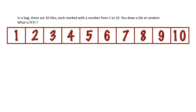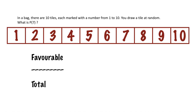Let's look at it in another context. Let's say I've got ten tiles, each marked with a number from one to ten. I put them in a bag and draw one at random. If the question is just a basic probability question — what is the probability of seven? — there's only one favorable outcome, and that's getting the seven. There are ten total outcomes, so the calculation is just one over ten.